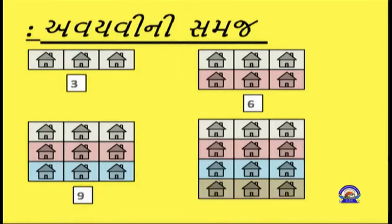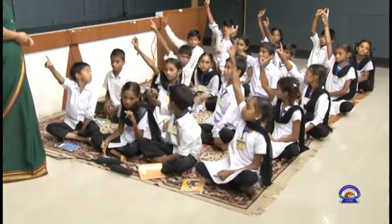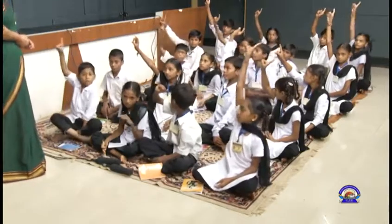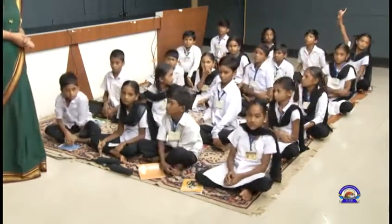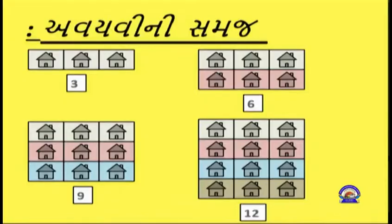3 ની ગુણિત: સૌથી પહેલા 3, તેમાં 3 ઉમેરતા 6, 6 માં 3 ઉમેરતા 9. 3, 6, 9 આ 3 ની અવ્યયી (ગુણિત) છે.